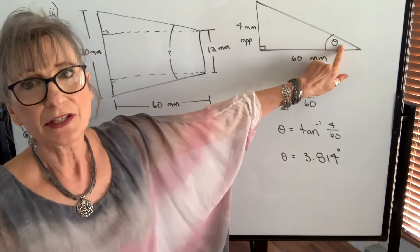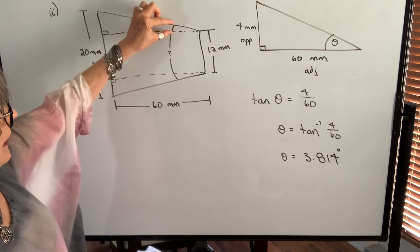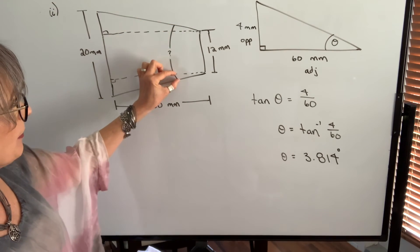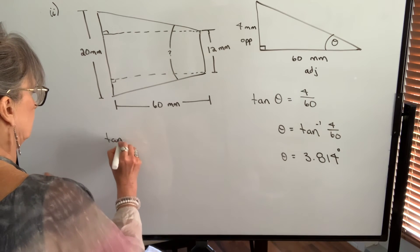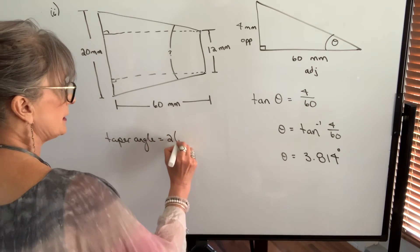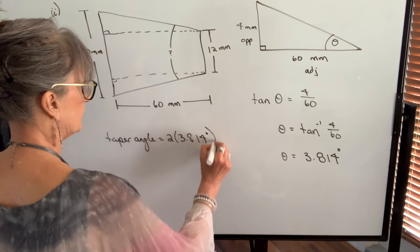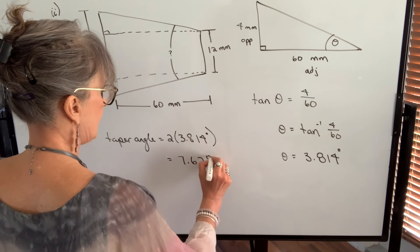That's this angle here. The taper angle or the included angle is going to be double that because it's that amount in that triangle. It's the same amount in this triangle. So our taper angle will equal 2 times 3.814 degrees, 7.628 degrees.